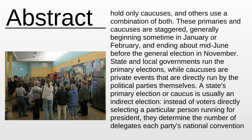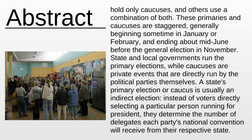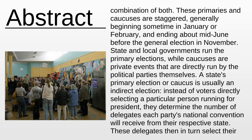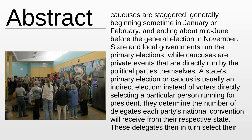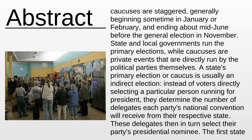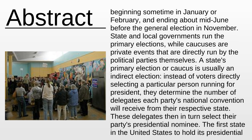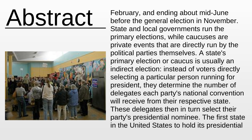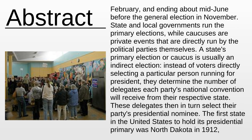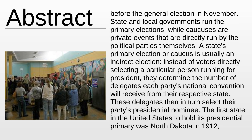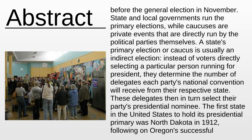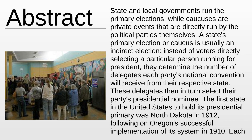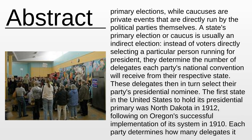These primaries and caucuses are staggered, generally beginning sometime in January or February, and ending about mid-June before the general election in November. State and local governments run the primary elections, while caucuses are private events that are directly run by the political parties themselves.